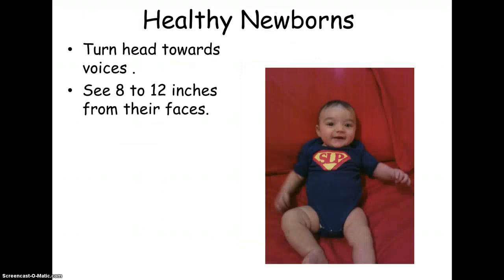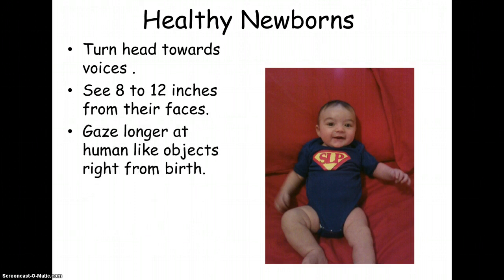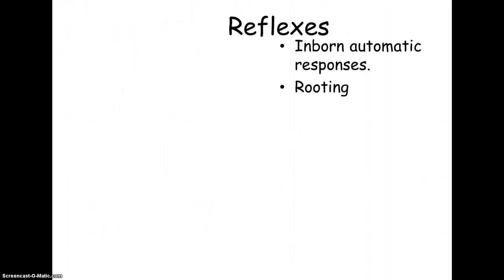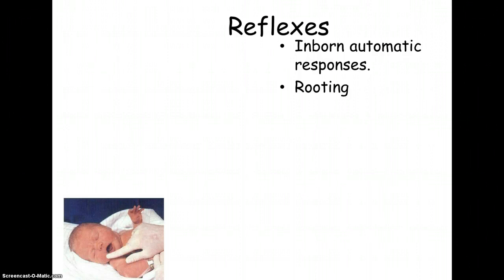Healthy newborns right away turn their heads towards voices, and some research says they can distinguish the sounds of their mothers and fathers from other voices. They are legally blind — they can see 8 to 12 inches from their faces, which from an evolutionary standpoint allows them to see their mother's face when eating. They gaze longer at human-like objects from birth. Reflexes are inborn automatic responses. Rooting is when you put your finger on the side of the child's mouth and they turn their lips that way and start to suck because they want to eat.